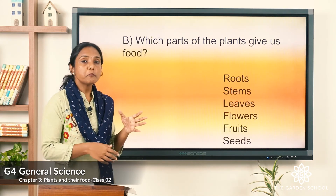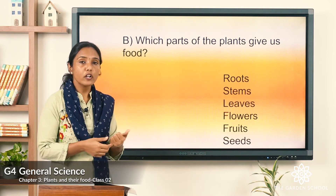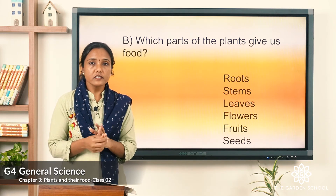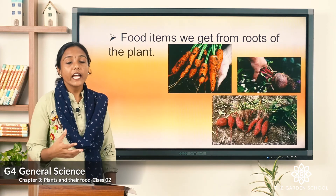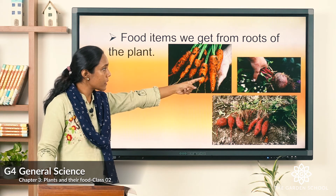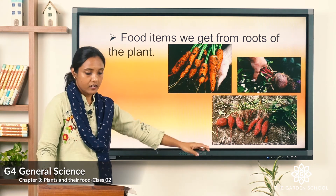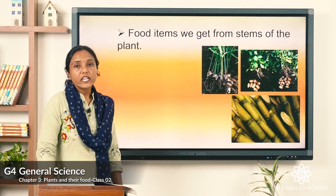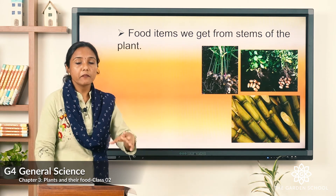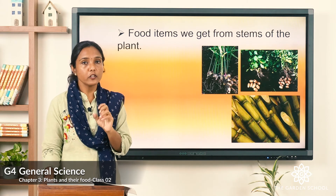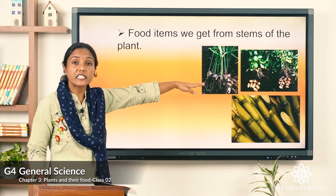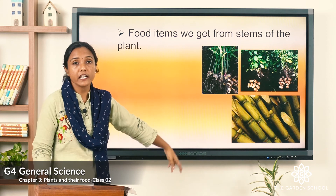Let us see which parts of the plant give us food: roots, stems, leaves, flowers, fruits, and seeds. From roots we get carrots, beetroot, and sweet potato. From stems we get ginger, potato — which is actually a stem vegetable called a tuber, not a root vegetable — and sugarcane.